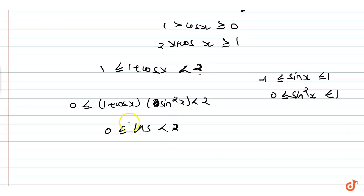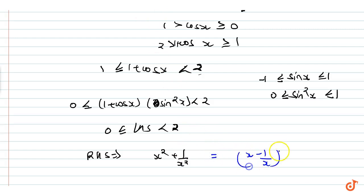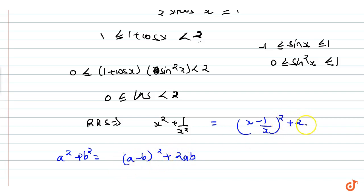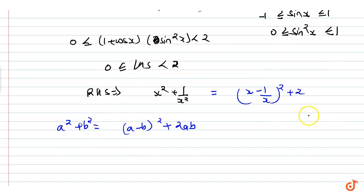Now let's analyze the RHS: x² + 1/x². We rewrite this as (x − 1/x)² + 2, using the algebraic identity a² + b² = (a − b)² + 2ab, where the 2ab term gives 2·x·(1/x) = 2.